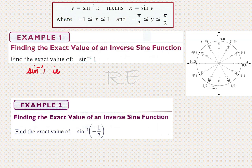For example 1, we are asked to find the exact value of inverse sine 1, which means we are looking for an arc whose sine is 1. Looking at the unit circle, the point has a cosine of 0 and a sine of 1, and it represents the arc π/2 or 90 degrees.